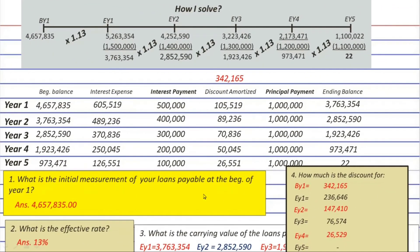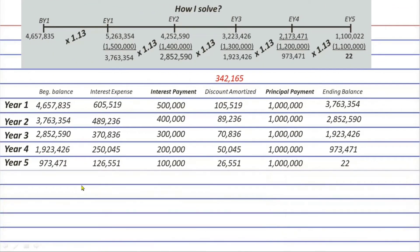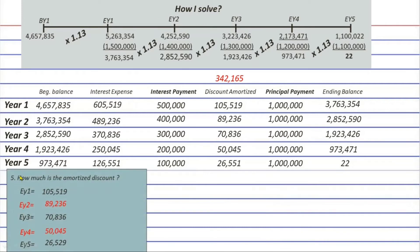Possible question number five: how much is the amortized discount? This is literally provided directly in the fourth column of the amortization table, so you can read it off immediately.